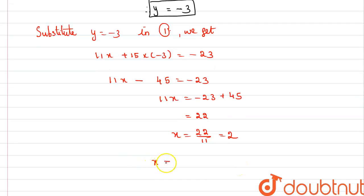So the values of x and y are: x equals 2 and y equals negative 3.